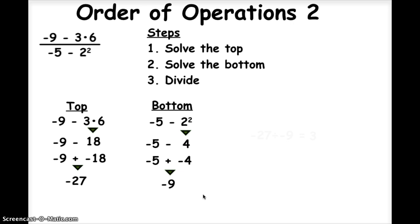I'm almost done. The next thing I'm going to do is I'm going to take my top and divide it by the bottom. So my top is negative 27, and I'm going to divide that by negative 9. And since the signs are the same, my answer is going to be positive, and 27 divided by 9 is 3. So the answer for that problem is 3.